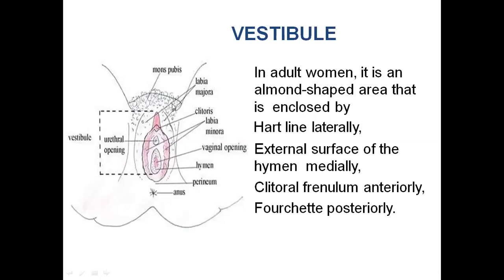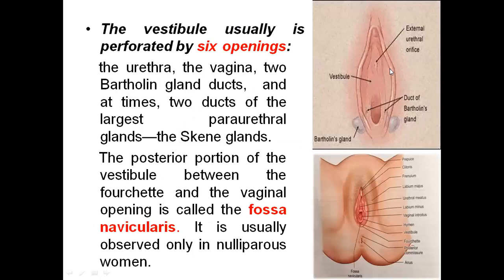The vestibule is an almond-shaped area in adult women that is enclosed laterally by Hart's line, the external surface of the hymen medially, the clitoral frenulum anteriorly, and the fourchette posteriorly. This area inside the labia minora has around six openings. The two major openings discussed in most textbooks are the urethral opening and the vaginal opening. Apart from these, we also see the openings of the two Bartholin glands and the two ducts of the largest para-urethral glands of Skene on either side of the urethral orifice. The posterior portion of the vestibule between the fourchette and the vaginal opening is called the fossa navicularis, usually observed only in nulliparous women.